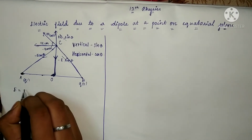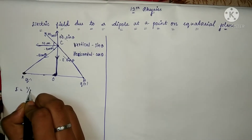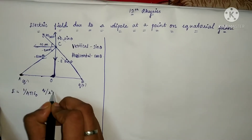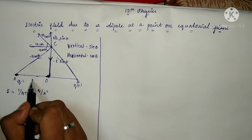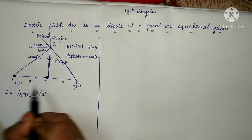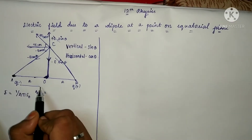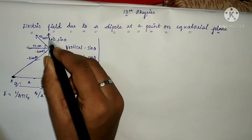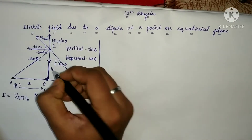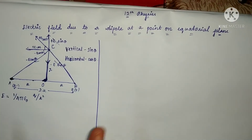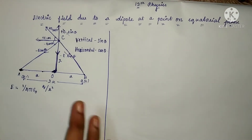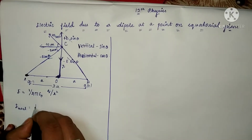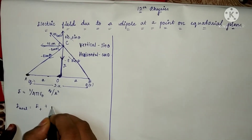This formula is very important in this lesson: 1 by 4π epsilon naught, q by r squared. We know that the two distances are equal, each being distance a, and the total dipole length is 2a. We can collect this distance r. The E total uses the superposition principle: E positive plus E negative.